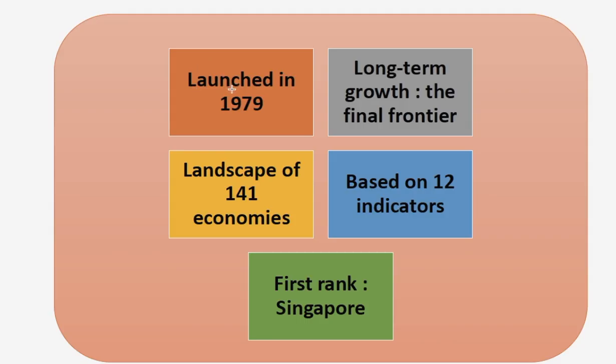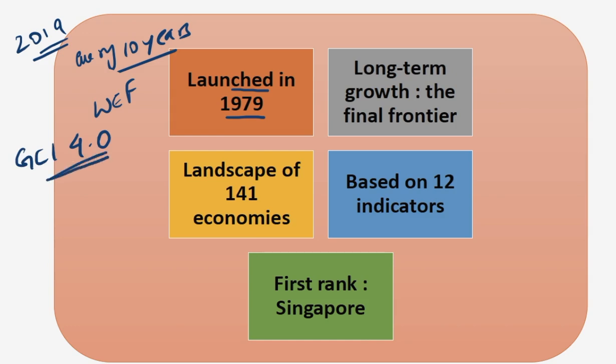This index was launched in 1979 and is prepared every 10 years by the World Economic Forum. In 2019 it released its fourth edition of the Global Competitiveness Report, also known as GCI 4.0, the fourth version since 1979. It provides an annual assessment of the drivers of productivity and long-term economic growth, wherein it assesses a particular country based on 12 indicators or 12 pillars.